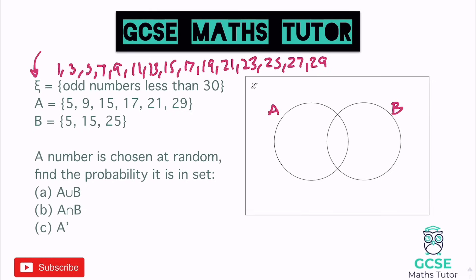The first thing we want to identify is what can go in the crossover — the intersection. Looking at A and B, there is a 5 in both, so let's cross off the 5 and put that into the Venn diagram, and cross it off the main list so we don't put it in twice. There's also 15 in both, so we'll put that in the middle as well and cross that off the main list.